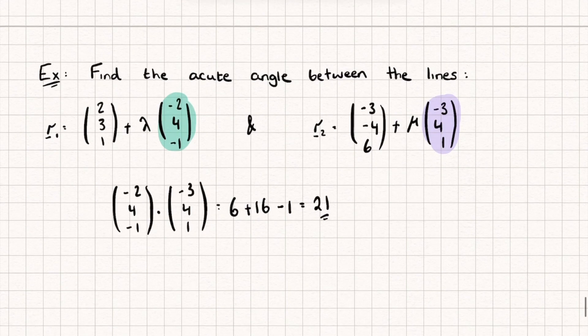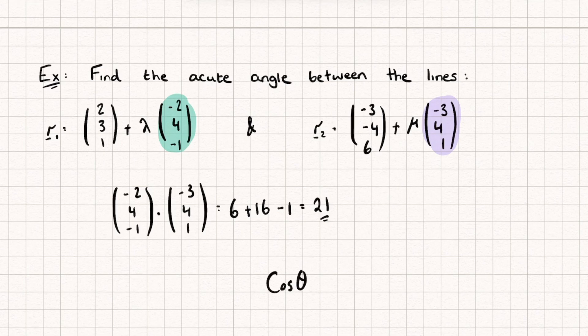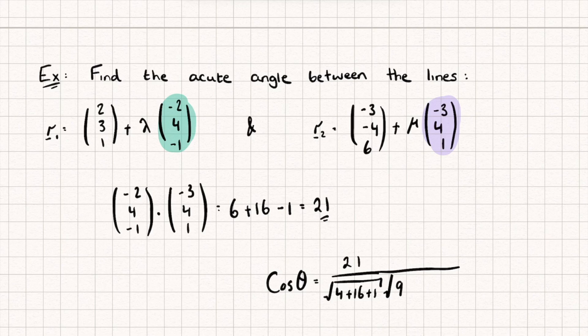Now remember when we're finding the angle between two vectors, we have that the cosine of the angle between the two is equal to a dot b, or in this case, our first direction vector dotted with our second one, which was 21 over the magnitude of our first vector. In this case, it will be the square root of negative two squared plus four squared plus negative one squared multiplied by our second direction vector magnitude. So that's going to be negative three squared plus four squared plus one squared. I'm just going to put that into my calculator now.